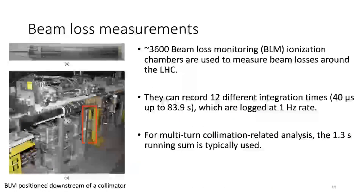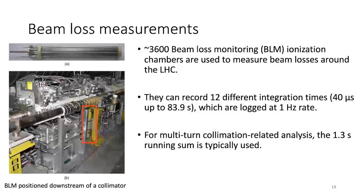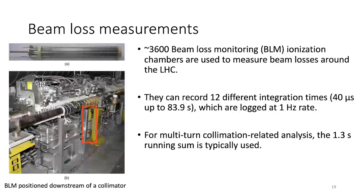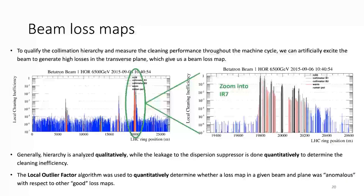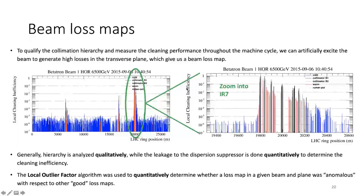We need instrumentation to measure how well the collimation hierarchy is set up, and we do that using beam loss monitors. Overall in the LHC there are about 2,600 BLMs. They can record 12 different integration times logged at 1 Hz. For collimation analysis we typically use the 1.2-second running sum. To qualify the hierarchy, after beam-based alignment we artificially excite the beam to generate high losses in the transverse plane, producing a beam loss map.